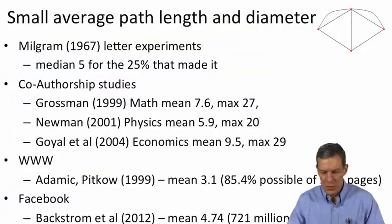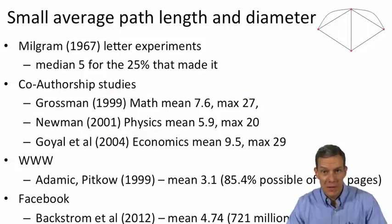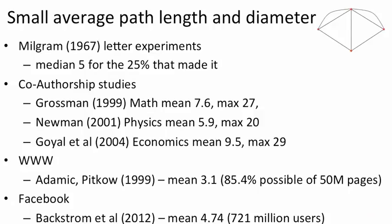Now, in terms of small average path lengths and diameters, one thing that's been found quite extensively in looking at social networks in the real world is that they tend to have short average path lengths and short diameters. And what do we mean by short? It means intuitively that we connect a large number of nodes with a fairly small number of connections. The most famous example of this was Stanley Milgram's experiment where he had people sending letters from one part of the U.S. to another.